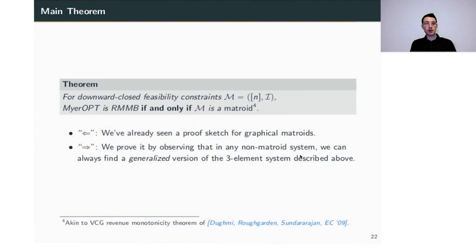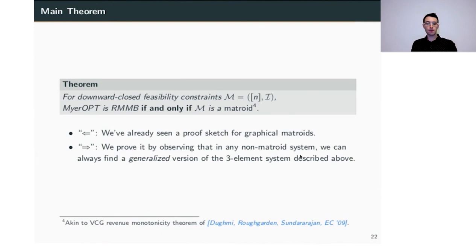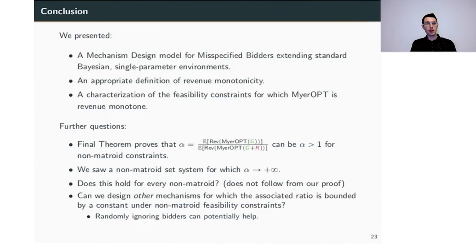Combining the two theorems, we have the following characterization: for downward closed feasibility constraint systems, Myerson's optimal mechanism is revenue monotone under misspecified bidders if and only if M is a matroid. To conclude, we presented the mechanism design model for misspecified bidders, proposed a notion of revenue monotonicity on that model, and characterized the feasibility constraints for which Myerson's optimal mechanism is revenue monotone.